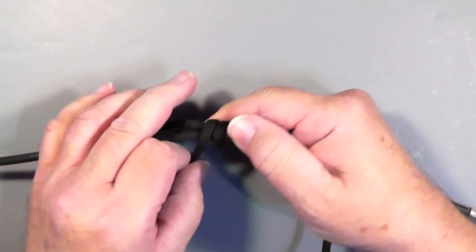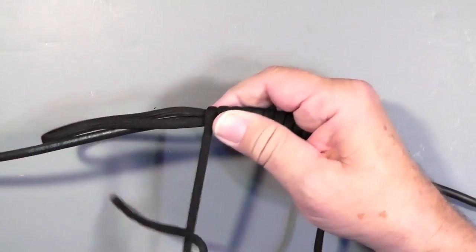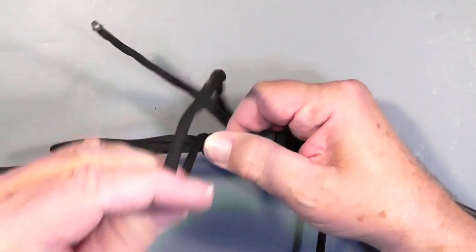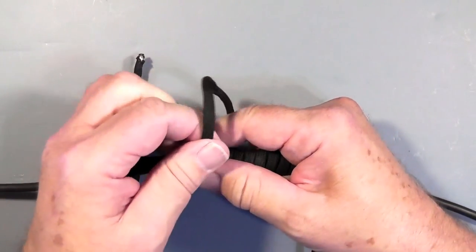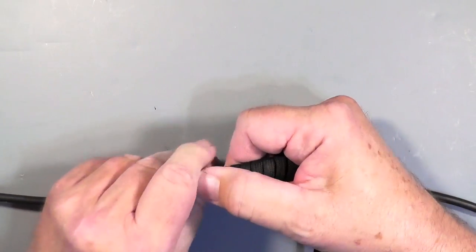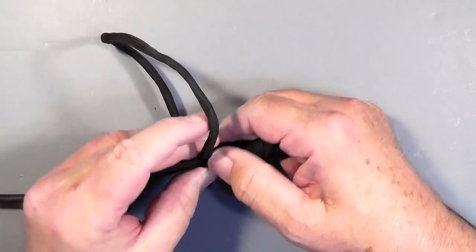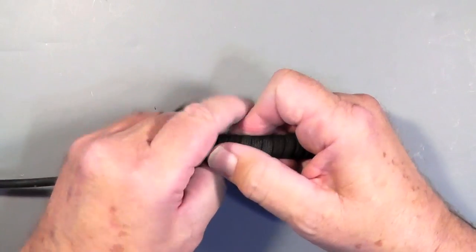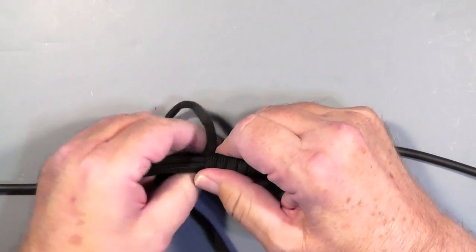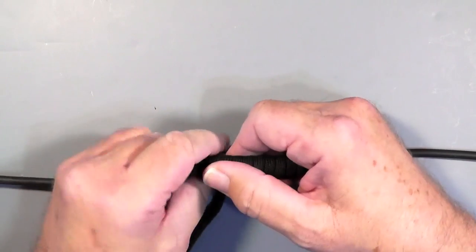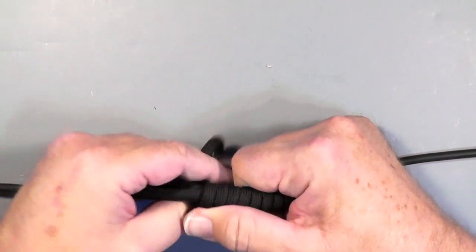Again, the purpose of this is for strain relief on the coax, so you're not pulling on the connectors. And I had a double reason on the dipole I put together is because the connectors on the antenna itself, I didn't want to put any strain on that SO239 connector. We're getting down here toward the end.